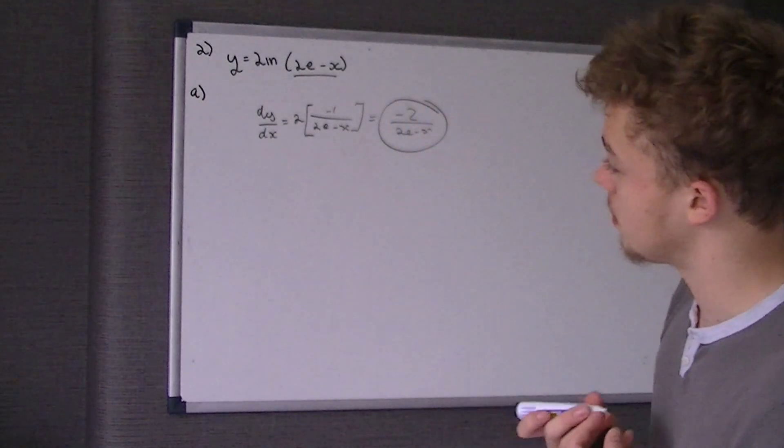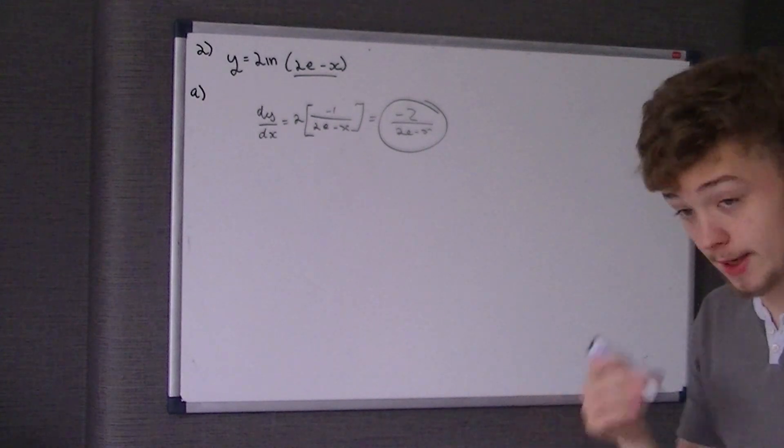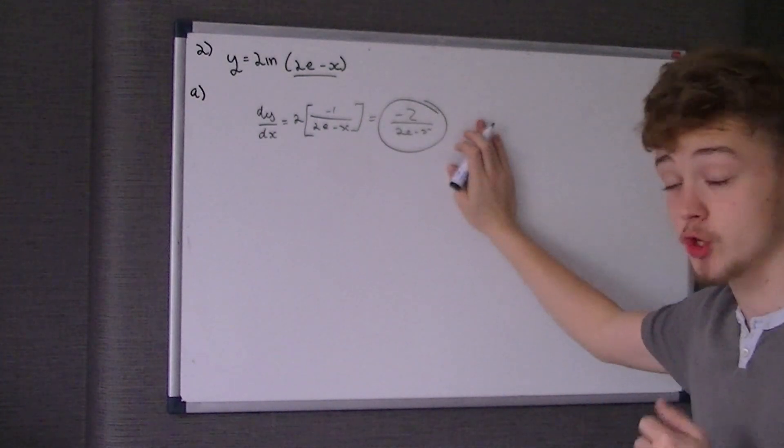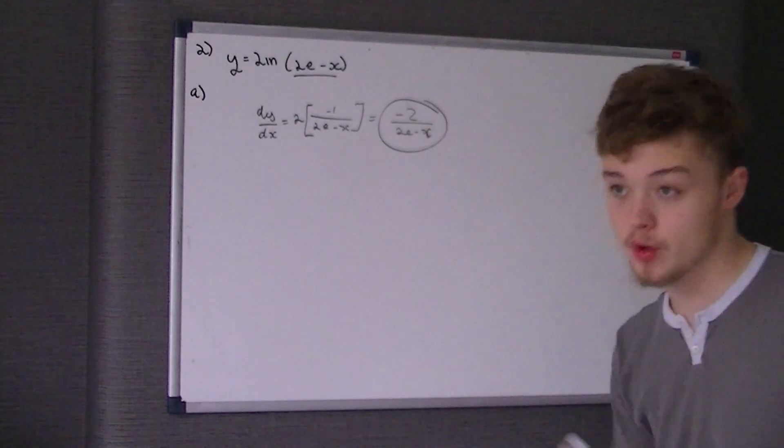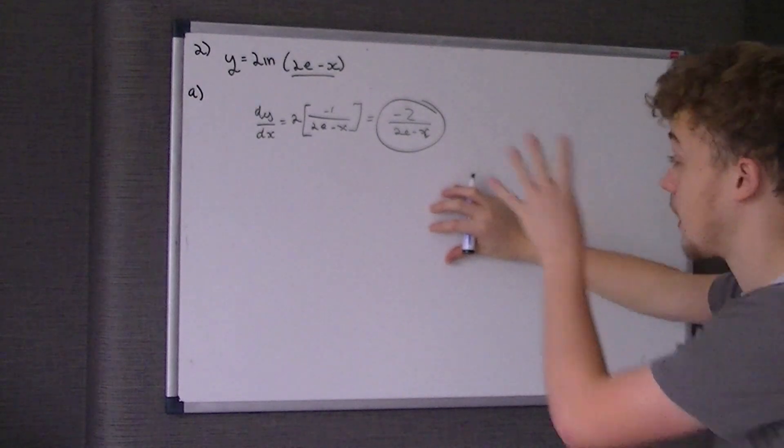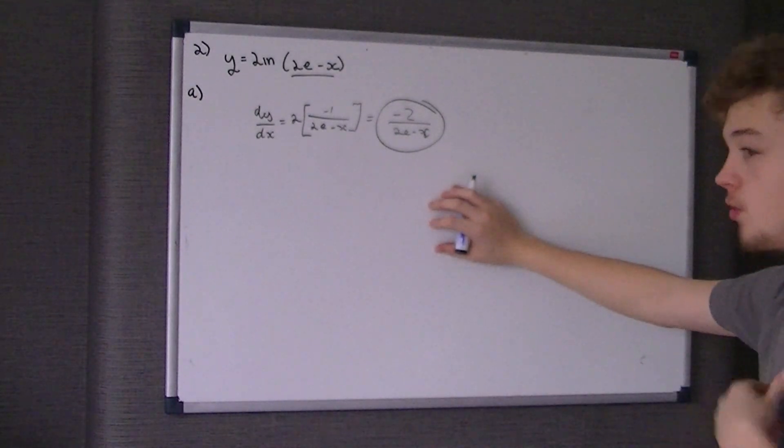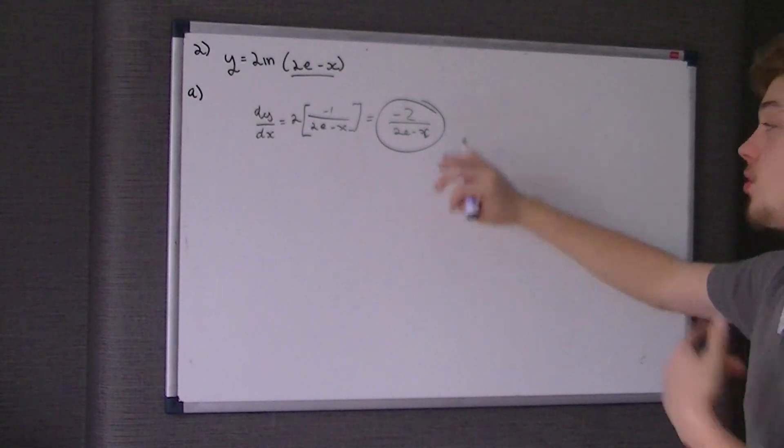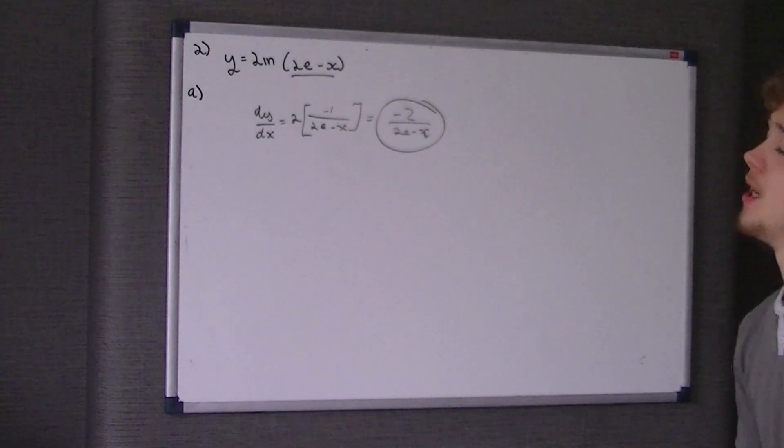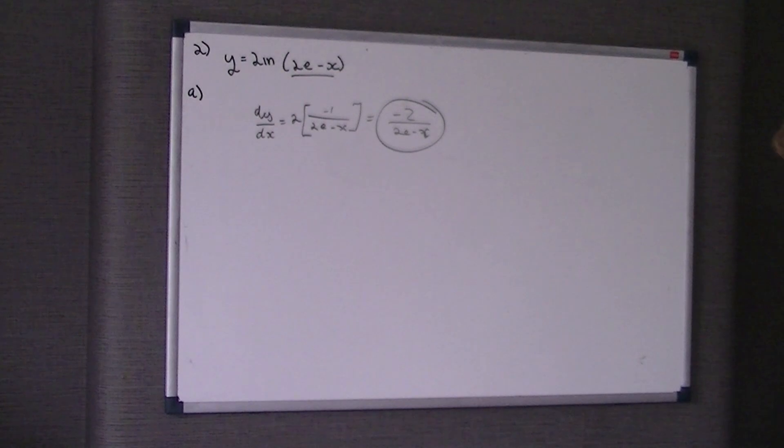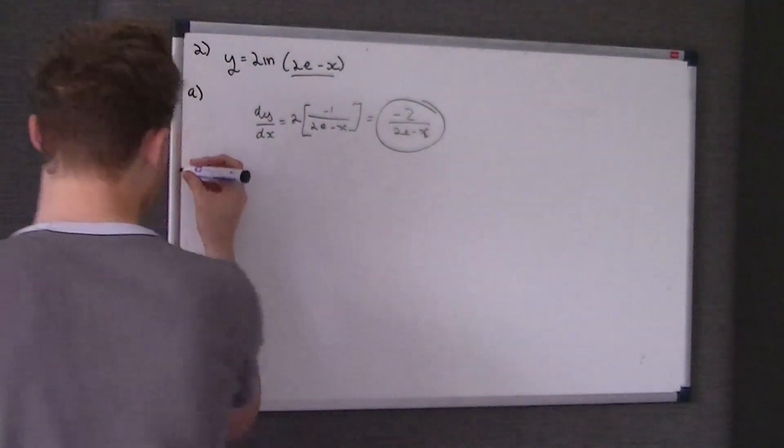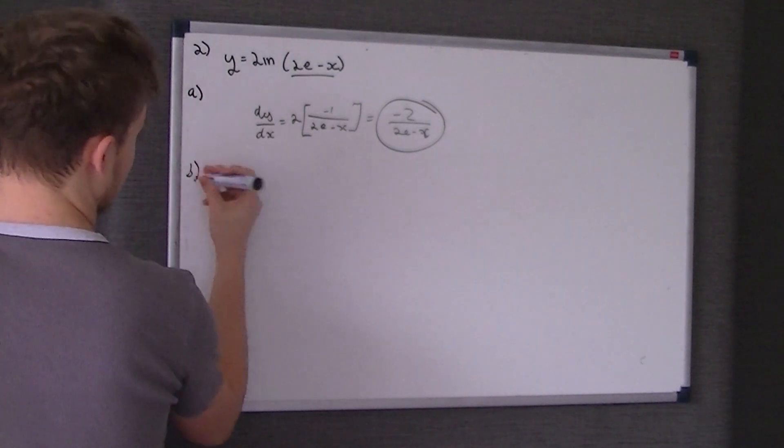The gradient function of a normal is the negative reciprocal of the gradient function of that curve. This is the gradient function of a curve, and at this gradient function, when we work out what the gradient is at a given point, we're told where x equals e.